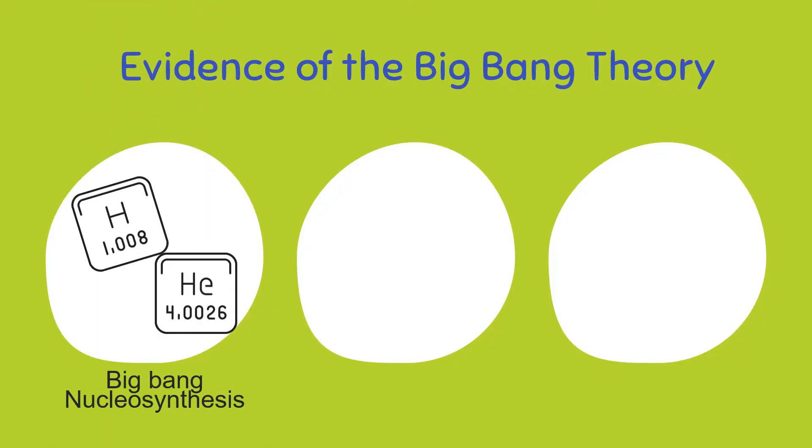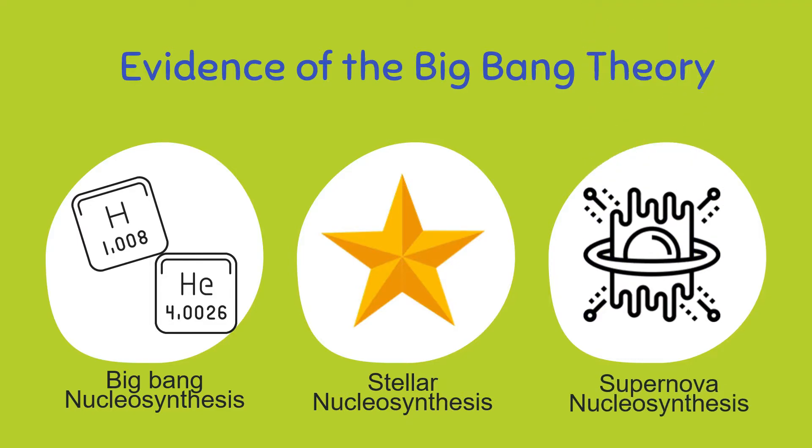Nucleosynthesis is divided into three parts: first the Big Bang nucleosynthesis, next the Stellar Nucleosynthesis, and the Supernova's Nucleosynthesis. Today we're going to relate these to the formation of elements as our star evolved.